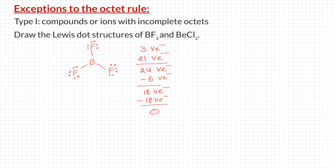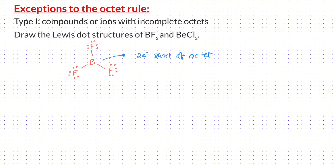Now let me check if each of the atoms has octet configuration. The terminal fluorine atoms all have octet configuration. However, the boron central atom has only 6 electrons — that is, 2 electrons short of octet configuration. So, according to the guidelines we discussed, we need to transfer one electron pair from the terminal atoms onto the boron as a multiple bond.